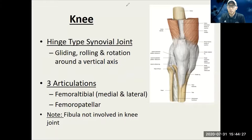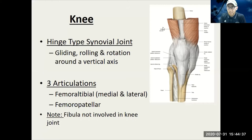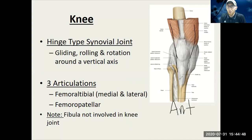The knee itself is a hinge joint, just like your elbow. It doesn't really do a lot of side-to-side lateral movement, but it does do flexion and extension very well. Remember the quadriceps are extension, hamstrings are flexion. Here's an anterior view of the knee itself with all those ligaments and tendons overlapping the knee joint.